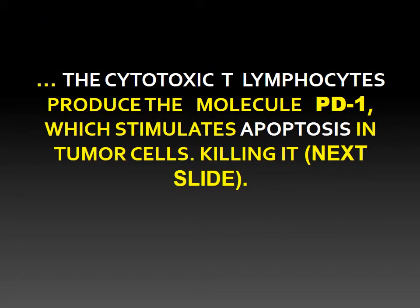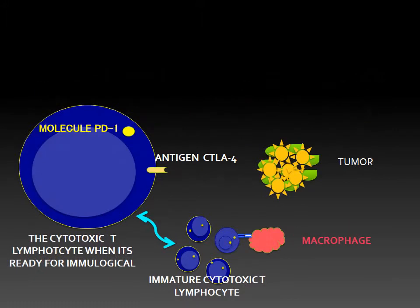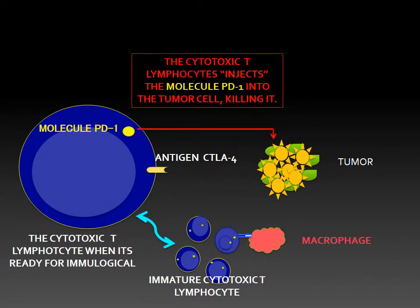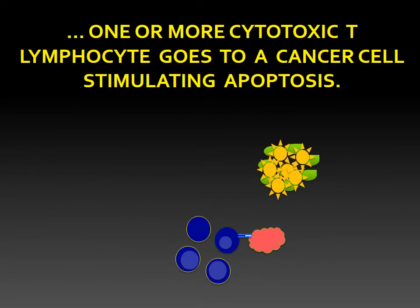The cytotoxic T lymphocytes produce the molecule PD-1, which stimulates apoptosis in tumor cells, killing them. The cytotoxic T lymphocytes inject the molecule PD-1 into the tumor cell, killing it. One or more cytotoxic T lymphocytes go to a cancer cell, stimulating apoptosis.